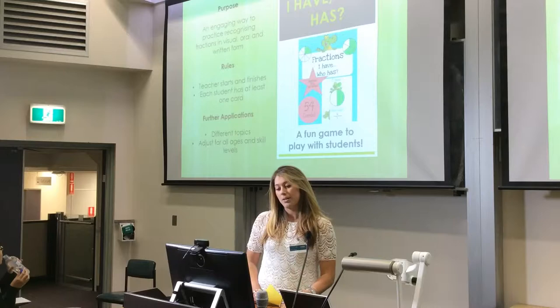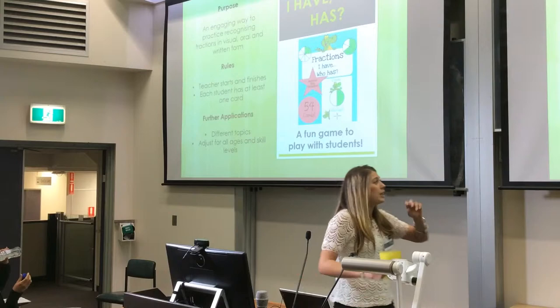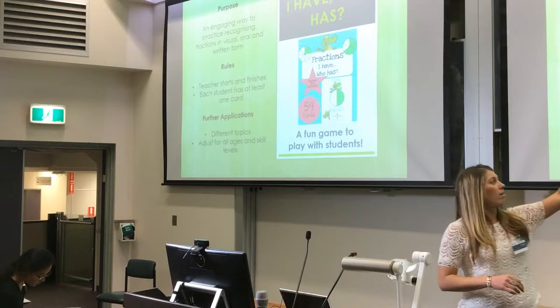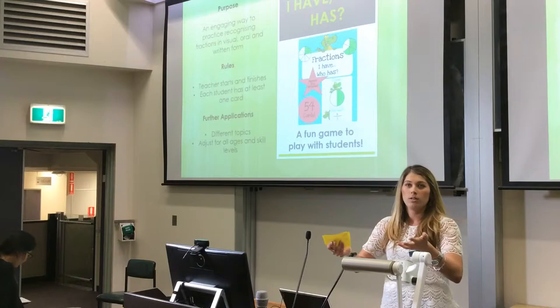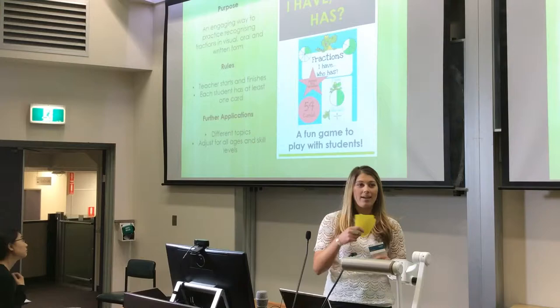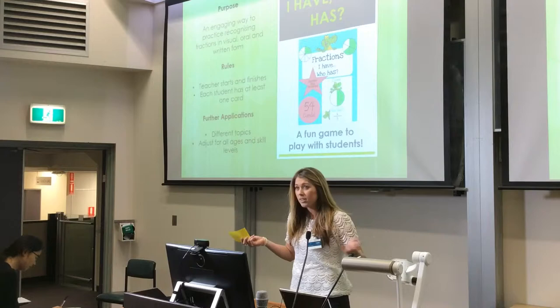So the rules for this activity: the teacher will start with a card and finish with a card. There will be a diagram, and whatever that diagram represents, the student will have to say what that fraction is. This is good for the teacher because they can assess where the students are at. For example, if it's a half, some students might say 'one two' — is that correct? So you need to fix the way that they say them.